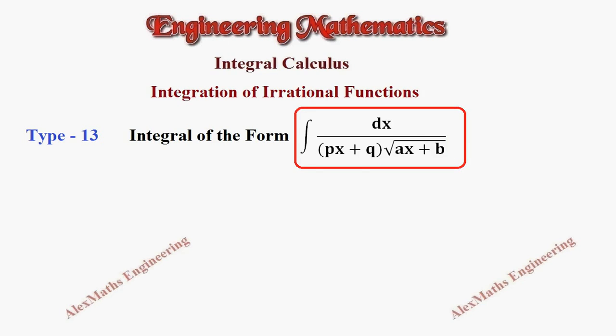We have two terms in the denominator. Both are linear. The term outside the square root is linear and the term inside the square root is also linear. Let's see the steps.